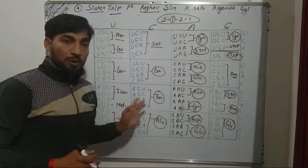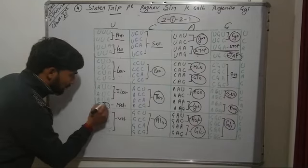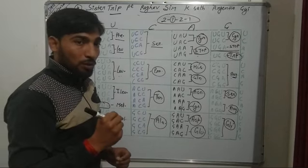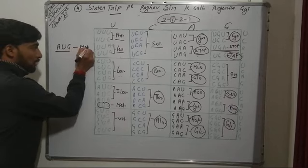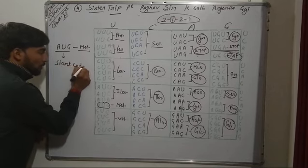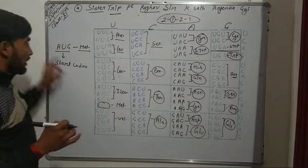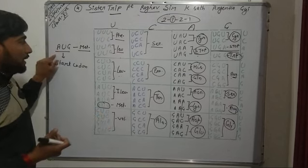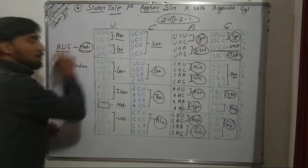Out of these 64 codons, one codon is responsible for starting the synthesis of a polypeptide chain, and that is AUG. AUG has dual function — this question is asked in board exams. The first function is that AUG codes for methionine. Its second function is that it acts as an initiator codon or start codon. Any polypeptide chain or protein that gets synthesized always has AUG as the first codon on mRNA, and the first amino acid is always methionine.